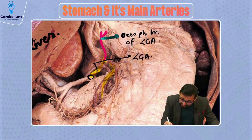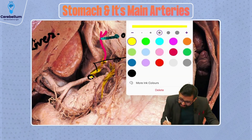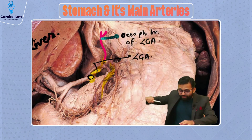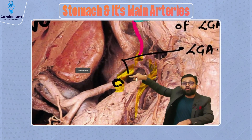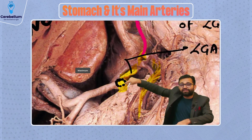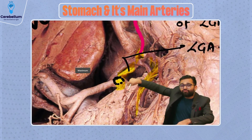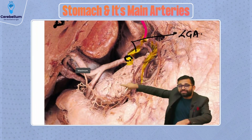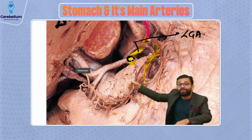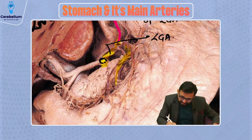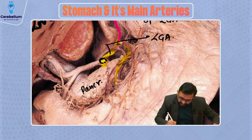Look here — another division is passing behind our stomach part. You can observe this artery is coming and then going behind. You can see this is our pancreas part at the bed of the stomach — this is our pancreas.